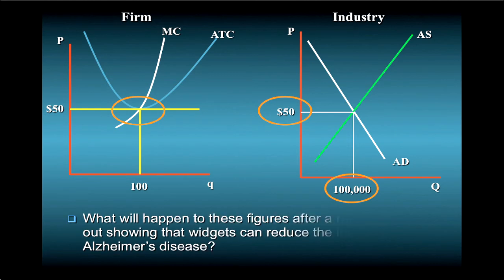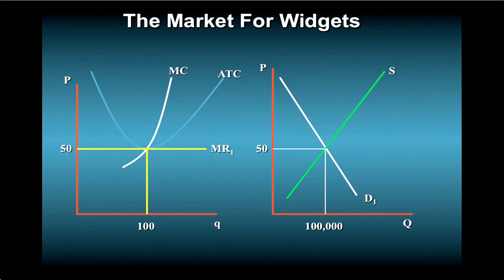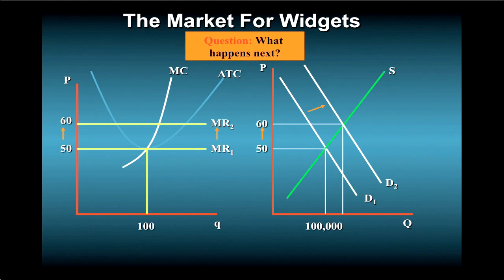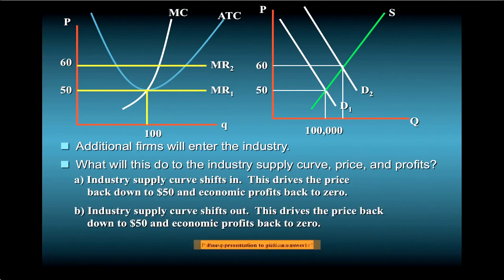Now what do you think will happen after a report comes out in the American Medical Journal showing that widgets can reduce the incidence of Alzheimer's disease among senior citizens? The demand curve will shift outward, reflecting an increase in demand. This will in turn increase the firm's price and marginal revenue and lead to an increase of profits above the zero level. Because of the lure of high profits, additional firms will enter the industry. What will this do to the industry supply curve, price, and profits?